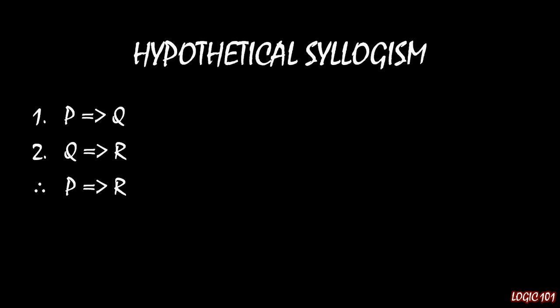This is similar to the transitive property of inequalities in mathematics, where A is greater than B and B is greater than C, so you can remove B as the middleman and say that A is greater than C. Similar story here — you can remove the middleman Q and get a new implication with just the first and the last.